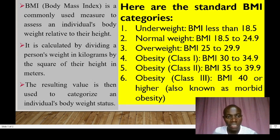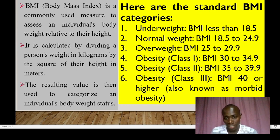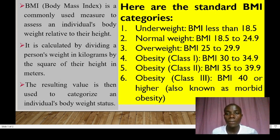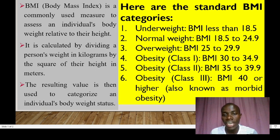The resulting value is then used to categorize individuals' body weight status. For underweight, the BMI will be less than 18.5. Normal weight, the BMI ranges between 18.5 to 24.9. Overweight BMI ranges from 25 to 29.9.